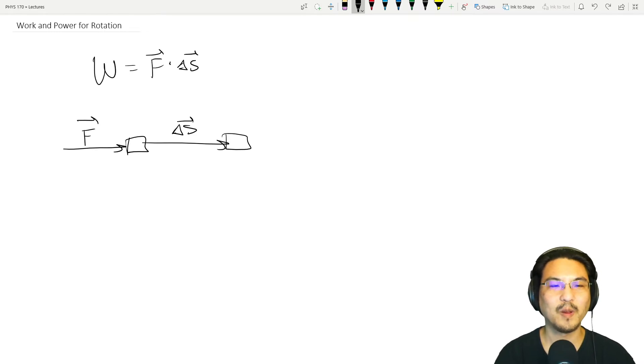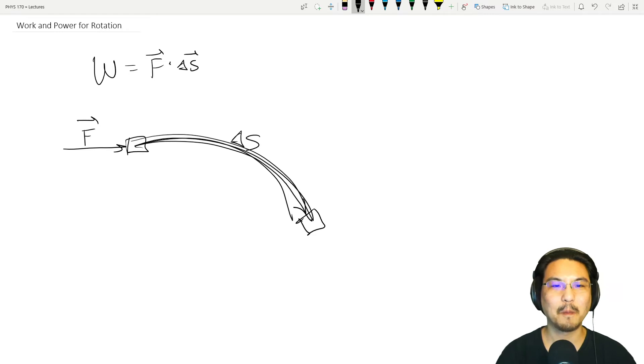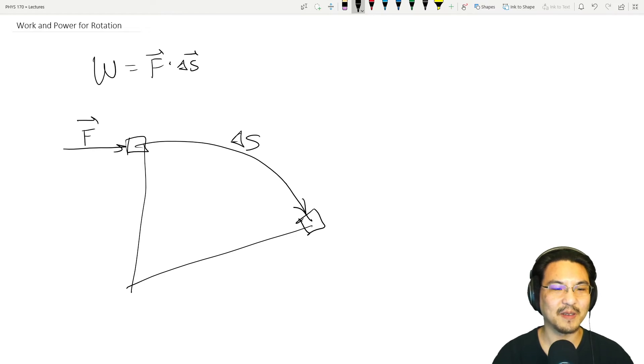Now imagine this time you don't go in a straight line, you go more like in a curve. So the displacement is along this arc length. Imagine for now it's a circle, so this is some Δθ and this is some radius r.